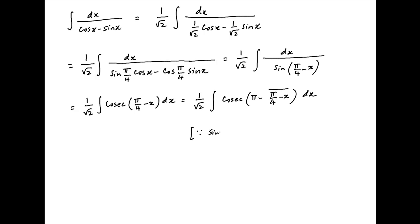And this is because of the property that sin of pi minus x is equal to sin of x, and therefore 1 upon sin of pi minus x or cosec pi minus x is equal to 1 upon sin x, which is cosec x.